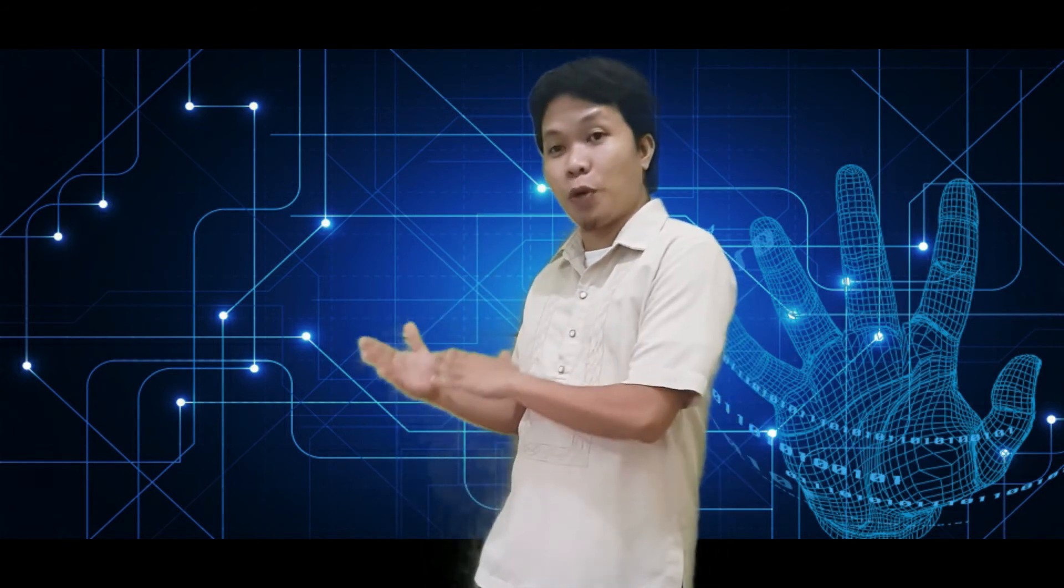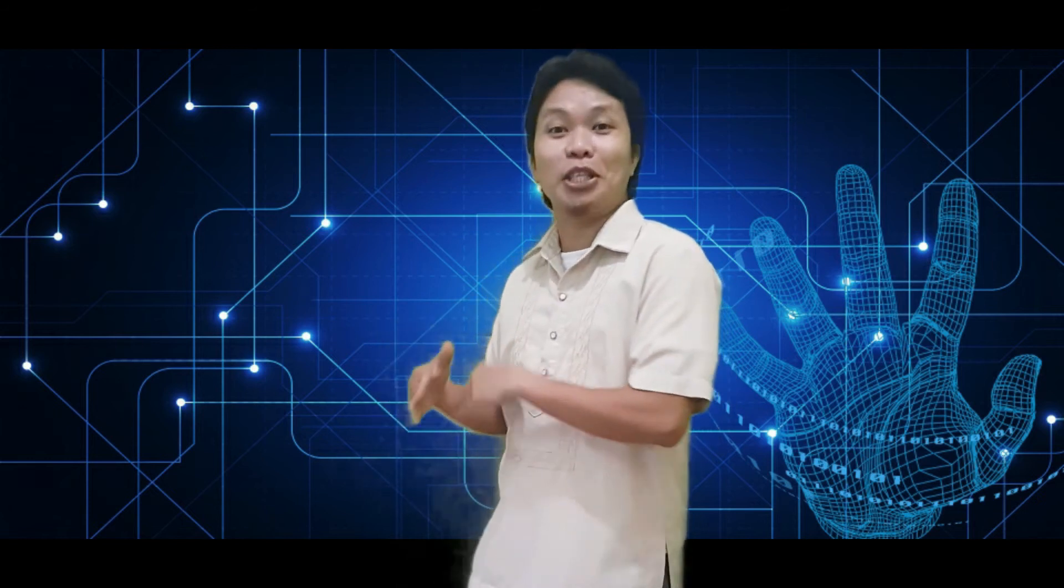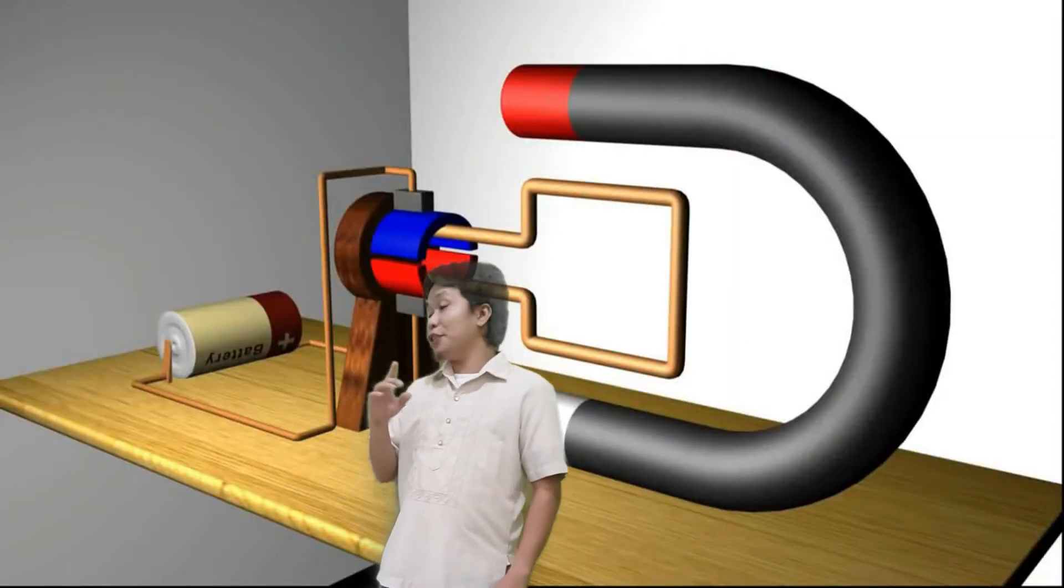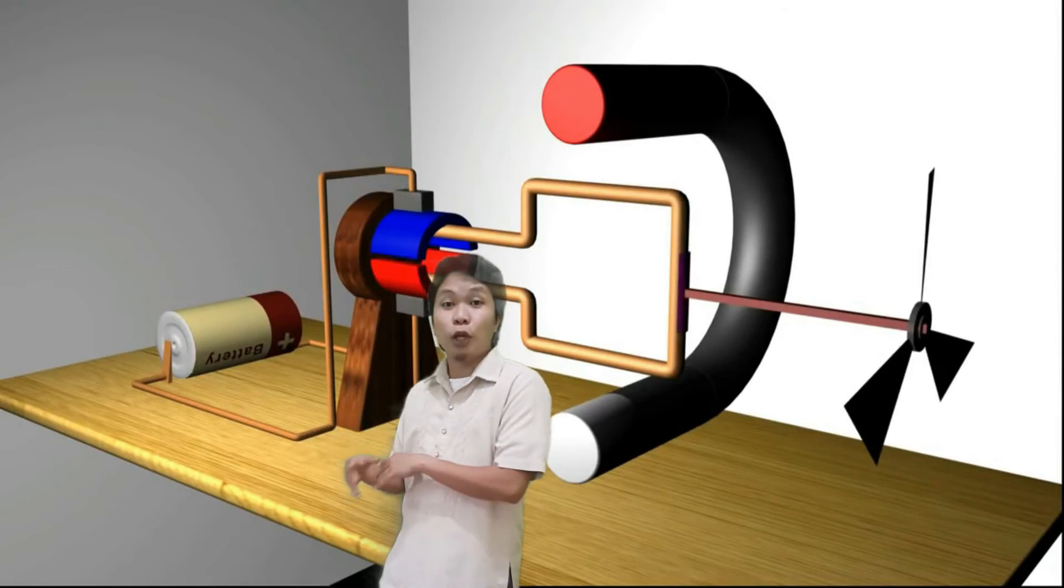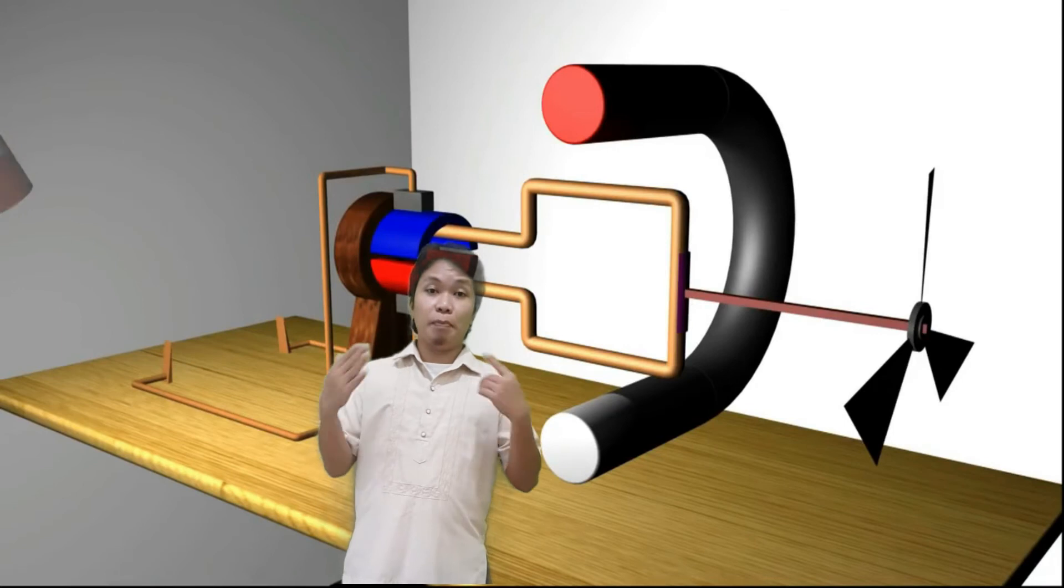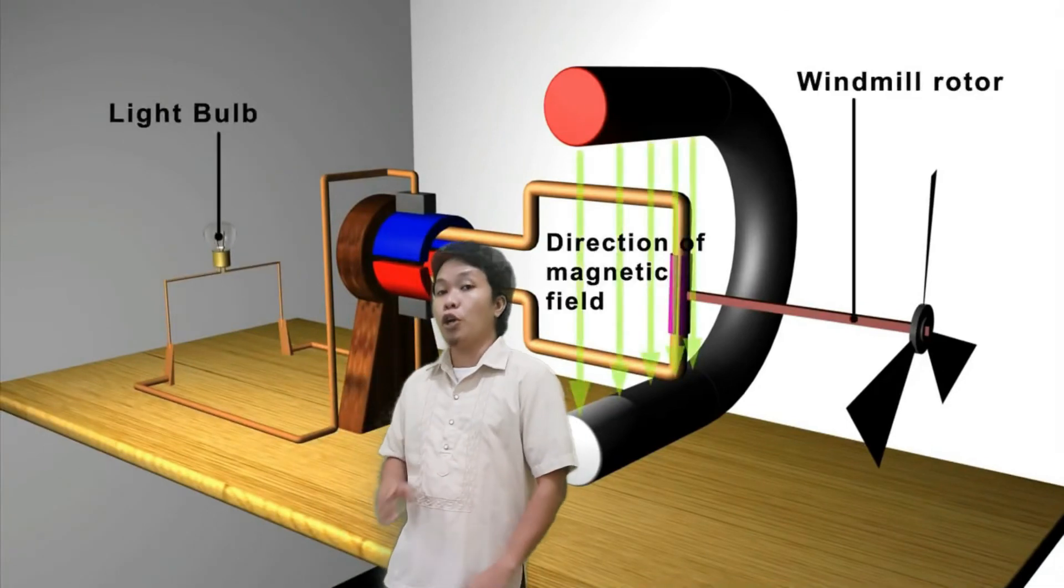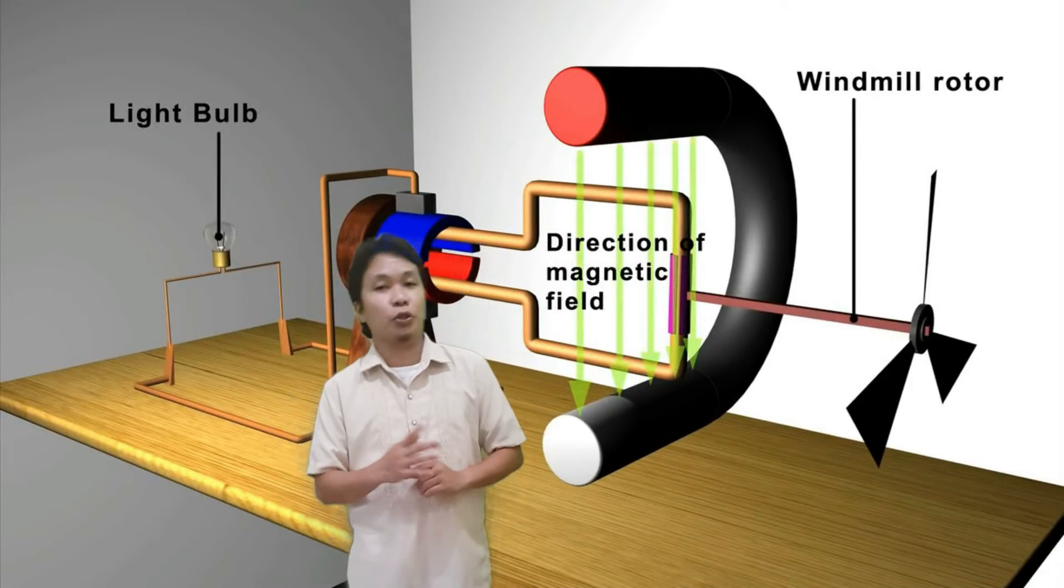So I have here a simple demonstration on how to convert an electric motor into a generator. In this case, we are going to attach a windmill rotor to the loop of wire, just like the concept of a windmill. Then we are going to replace the battery with a light bulb as our electrical output.